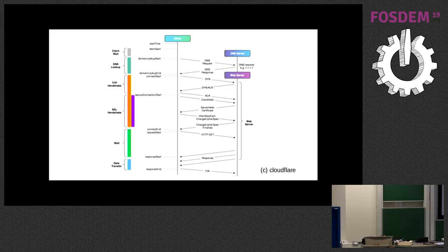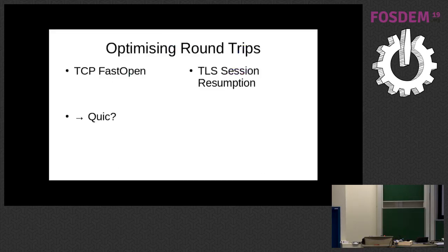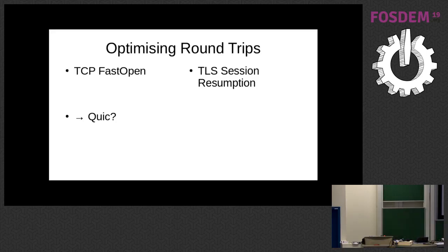What do people do to reduce the number of round trips? There are a few mechanisms. One is TCP fast open. There's TLS session resumption, which you may be more familiar with. And then there's QUIC, which will be the base for the HTTP/3 protocol. So these are mechanisms to reduce the round trips, and we had a look at the privacy properties in these protocols.